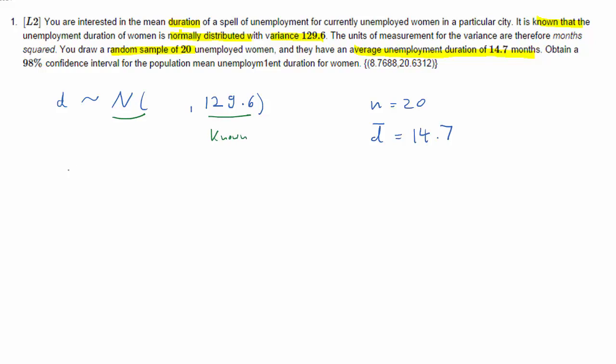Given that we know d is normally distributed and the variance is known, we can conclude that d bar, the sample average, is also normally distributed with some mean we call it mu d bar and variance sigma squared d bar. Now sigma squared d bar is related to sigma squared d, the variance of the random variable d itself, via this formula. It's equal to sigma squared d divided by n.